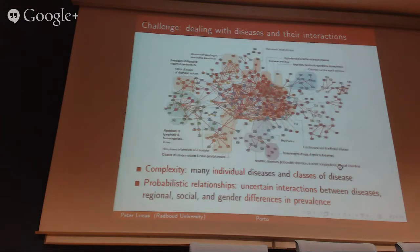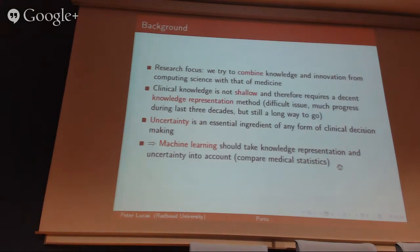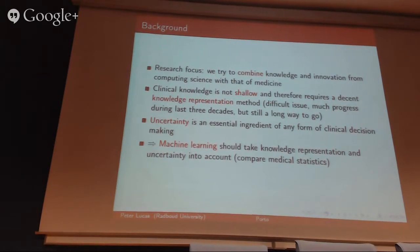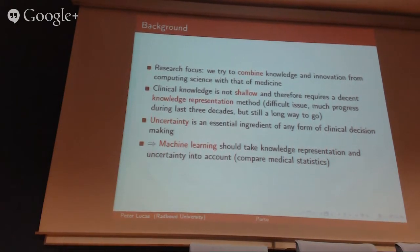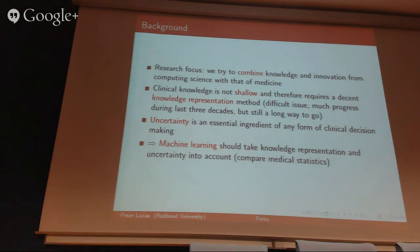That's what I try to achieve: to bridge the boundary between what is available in computer science and the rich content behind medical problems. That explains the emphasis on knowledge representation. Another issue is uncertainty — in medicine, uncertainty is an essential ingredient. Without uncertainty, you cannot do decent clinical decision making. So we try to use knowledge representation together with uncertainty, which is something standard medical statistics lacks with respect to knowledge representation.